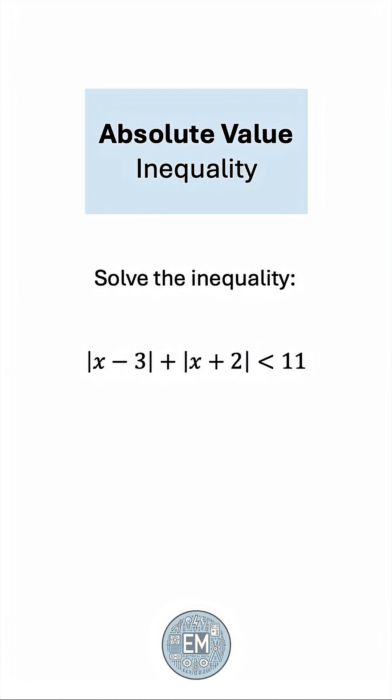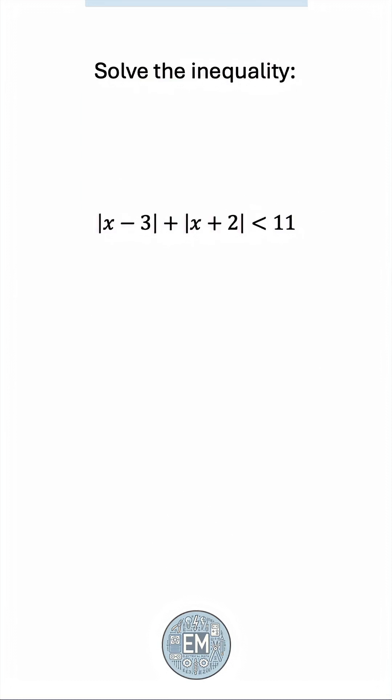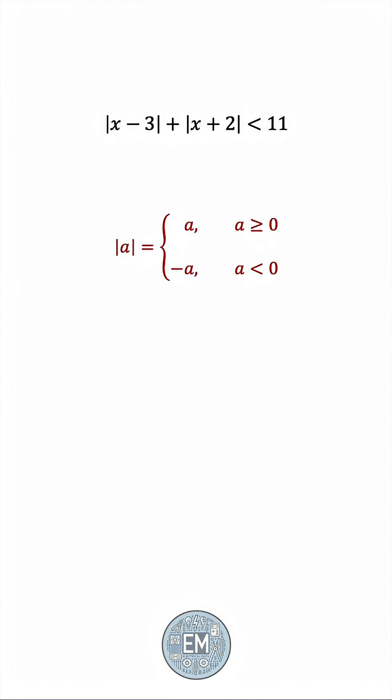Absolute value inequalities are a pain for many students. Let's take a look at such a problem step by step together. The absolute value of any quantity is the positive version if the quantity is positive, but the negative version if the quantity is negative. Let's use this for each of the two absolute values we see.